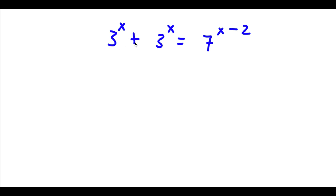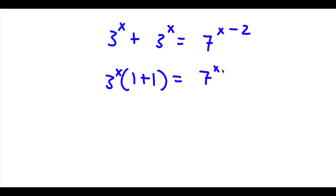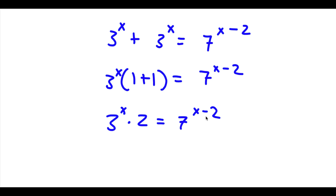Now the first thing I'm going to do is for my left hand side I'm going to factor out 3 to the power of x. So now I have 3 to the power of x times 1 plus 1, and this is equal to 7 to the power of x minus 2. Now 1 plus 1 is 2, so now I have 3 to the power of x times 2 is equal to 7 to the power of x minus 2.